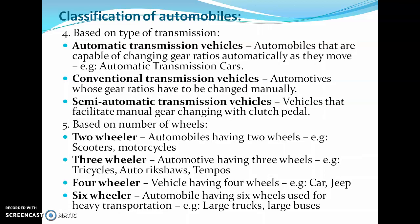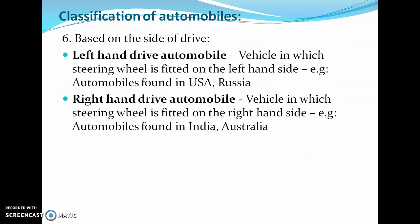The fifth classification is based on number of wheels: two-wheeler, three-wheeler, four-wheeler, and six-wheeler. The last classification is based on the side of the drive. Left-hand drive automobiles have the steering wheel fitted on the left-hand side, found in countries like the USA and Russia. Right-hand drive automobiles have the steering wheel on the right-hand side, found in India and Australia.